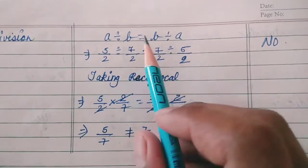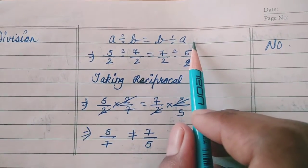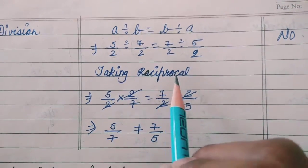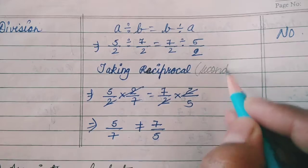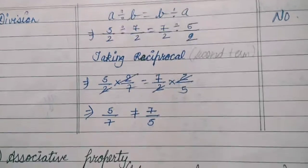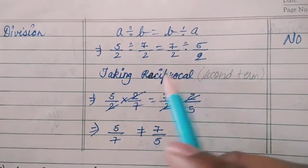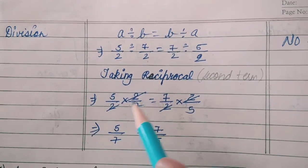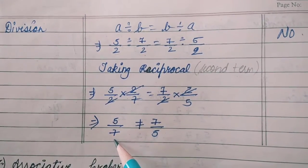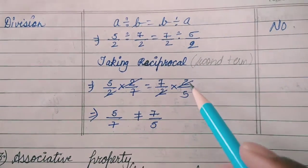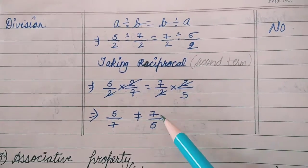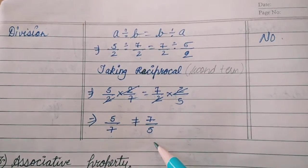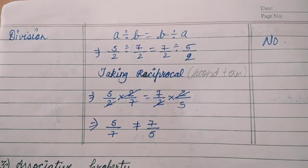The last operator for commutative is division: A divided by B equals B divided by A. Left side — 5 upon 2 divided by 7 upon 2 — we take the reciprocal of the second term: 7 upon 2 becomes 2 upon 7, then cut 2 to 2 and get 5 upon 7. Right side — 7 upon 2 divided by 5 upon 2 — reciprocal of 5 upon 2 is 2 upon 5, cut 2 to 2 and get 7 upon 5. Both are rational but not equal, so under division, commutative property is not satisfying.